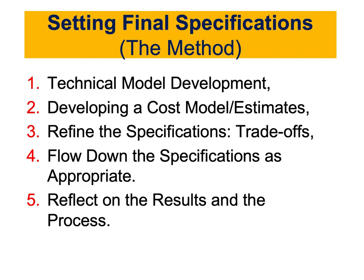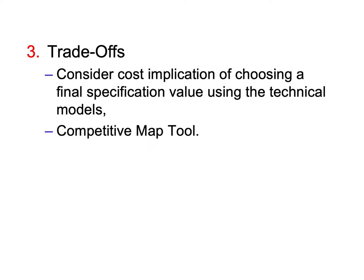At this stage, we should have had our technical models — a couple of them. We know how to set up these models and we know what our target metric is that we are trying to find the final specification for. We have also developed our cost model and looked at our bill of materials, so we know what our margins are — the low and the high limits of the costs. After doing these two steps, we can start refining and doing tradeoffs.